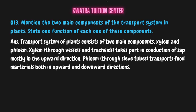Question number thirteen: mention the two components of the transport system in plants and state one function of each. The two components are xylem and phloem. Xylem has vessels and tracheids and conducts sap mostly in an upward direction — water is absorbed from below and transported upward. Phloem transports food material both upward and downward, because food is made in the leaves and may be required in parts both above and below.